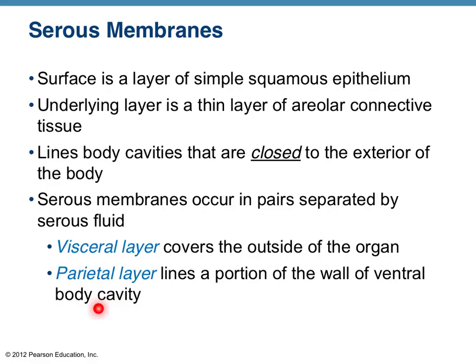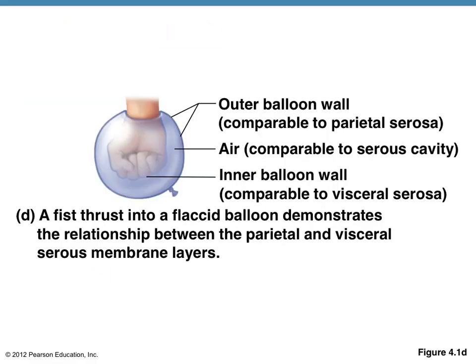There is a space between those two layers of serous membrane. This balloon model illustrates the concept well. The layer of balloon that surrounds the fist represents the visceral membrane, because it surrounds the structure. The outer layer of the balloon wall represents the layer that lines the cavity — the parietal layer.